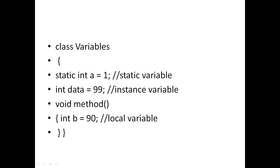Here is a simple example of how to declare these variables. For a static variable, you add the 'static' keyword before the data type — for example, static int a equal to 1. For an instance variable, just declare with data type and name — int data equal to 99, no special keyword needed. And int b equal to 90 declared inside a method would be a local variable.